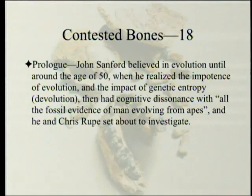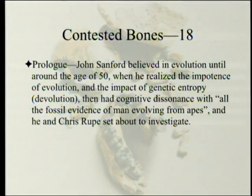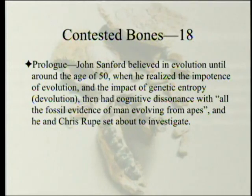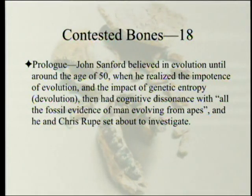The prologue explains why the book was written in the first place. John Sanford believed in evolution until around the age of 50, when he realized that evolution couldn't do what it was advertised to do, and that evolution was fighting against a far more powerful force called genetic entropy — which you might call devolution. He concluded that not only was evolution wrong, but the age that evolution depended on was in all probability wrong too. He had cognitive dissonance with what he called all the fossil evidence of man evolving from apes. So he and Chris Roop set out to investigate, and the results of their investigation is the book.